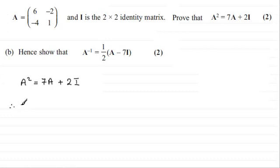Well, A squared is the same as A times A. So we've got A times A then equals 7A plus 2I.